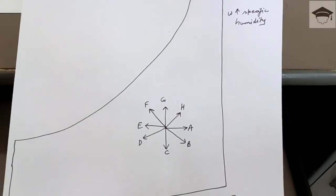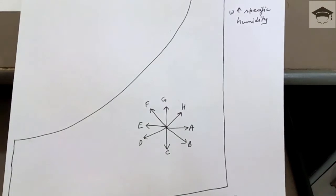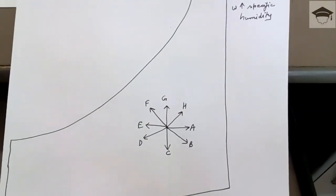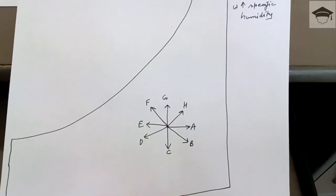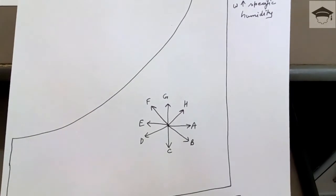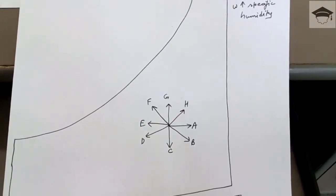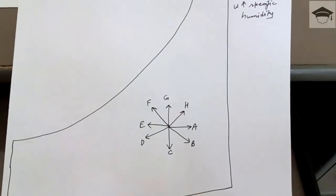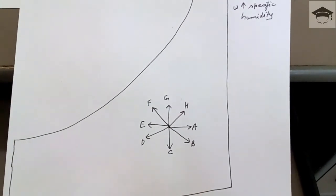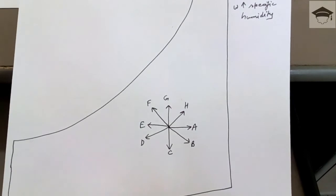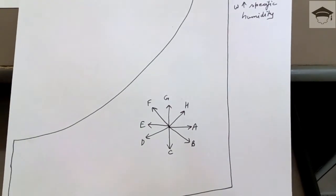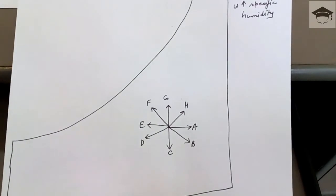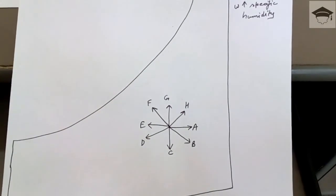Different processes that can occur are shown from A to H. Process A is known as the sensible heating process, in which the specific humidity remains constant and the dry bulb temperature increases. Process E is known as the sensible cooling process, in which the specific humidity remains constant and the dry bulb temperature decreases.